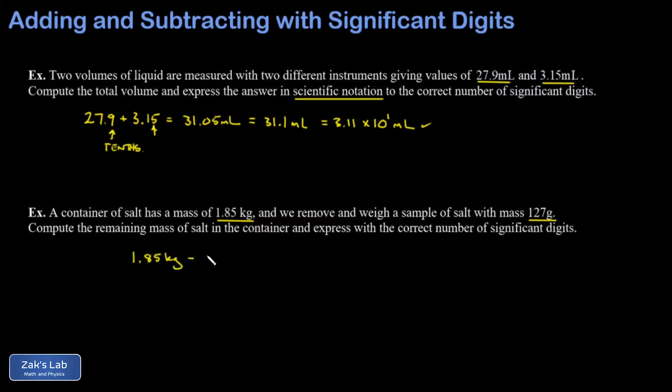Of course, the remaining mass in the container requires a subtraction problem. So we have 1.85 kilograms minus 127 grams, but we need our units to match here. So we're going to convert those grams to kilograms.